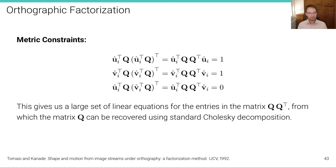Choice of Q. So, these are the metric constraints that we want to enforce. And this gives a large set of linear equations for the entries in the matrix QQ^T, as you can see here. It's linear in the entries of the matrix QQ^T. This is considered as one matrix. And from there, the matrix Q can be recovered using standard Cholesky decomposition. Because it's a Q, Q^T decomposition problem. We can just solve using a standard algorithm.